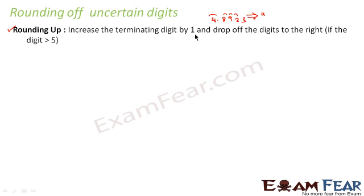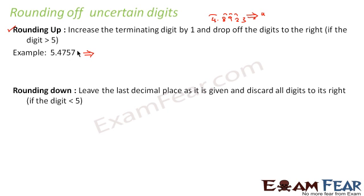For example, take 5.4757 with 4 decimal places. If we want to round it off to 3 decimal places, we look at the digit being removed — which is 7. Since 7 is greater than 5, we increase the preceding digit by 1 and remove the rest, giving 5.476. This is rounding up.